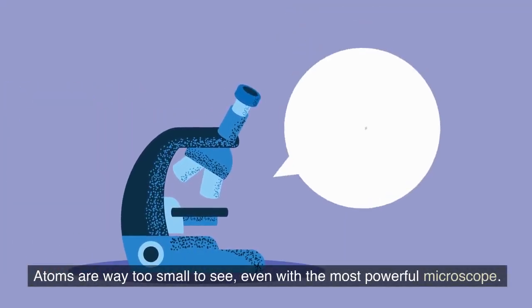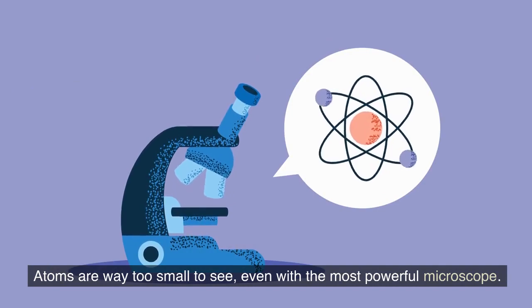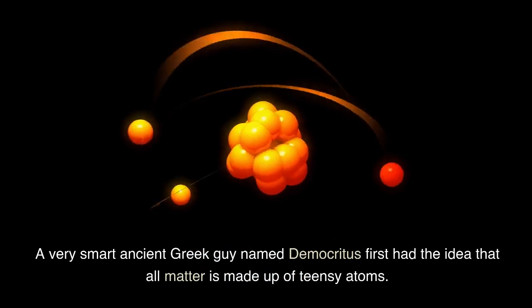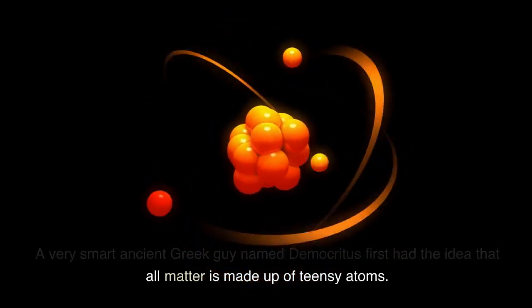Atoms are way too small to see, even with the most powerful microscope. A very smart ancient Greek guy named Democritus first had the idea that all matter is made up of teensy atoms.